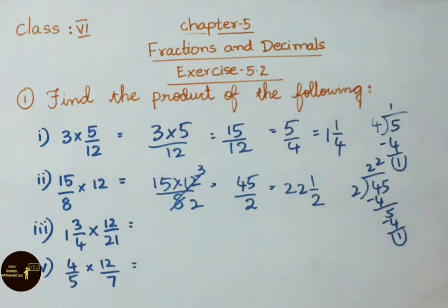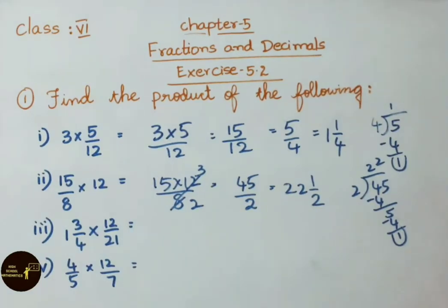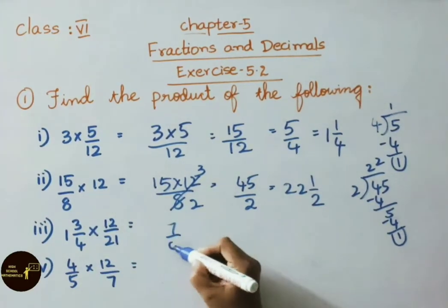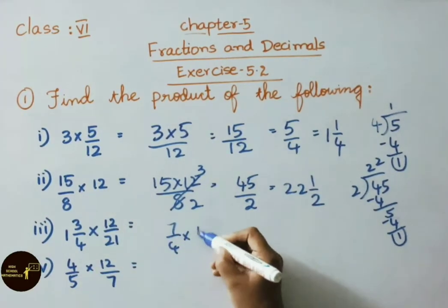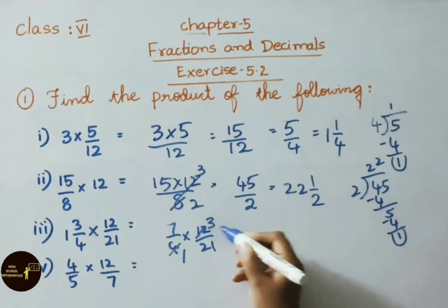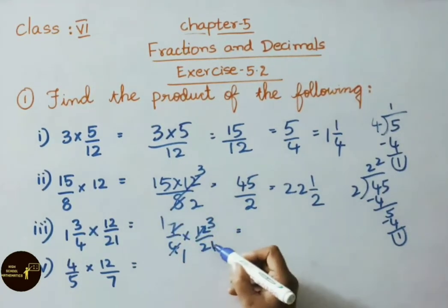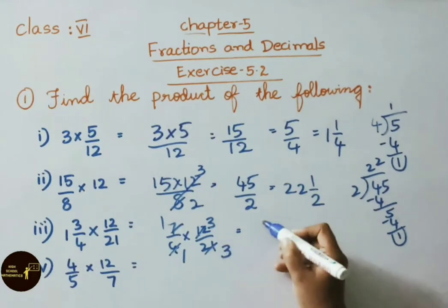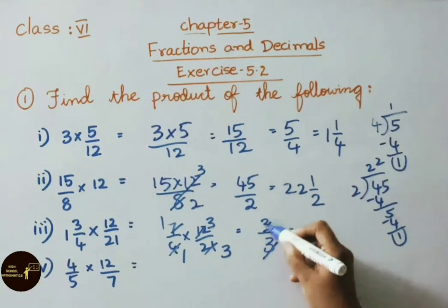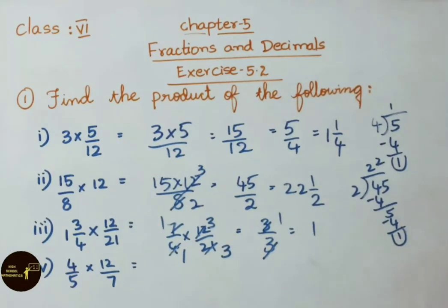The third sum is 1 and 3 by 4 into 12 by 21. Let us convert the mixed fraction into improper: 4 ones are 4, 4 plus 3 is 7, giving 7 by 4. So 7 by 4 into 12 by 21. Using the tables: 4 threes are 12, 7 threes are 21. This gives 3 by 3, which equals 1. So the answer is 1.